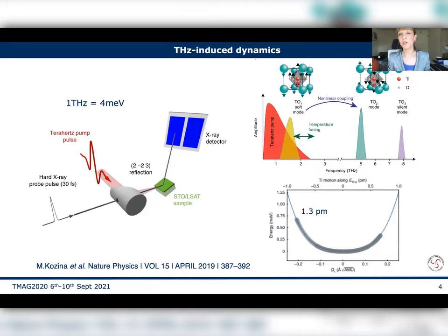So all the atoms in the material were moving in a coherent way, and they could actually span the electric potential around the equilibrium displacement of about 1.3 picometer for the titanium, which is one of the atoms which moves more.